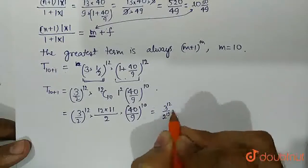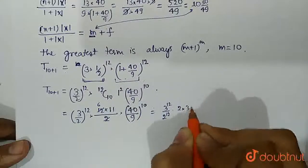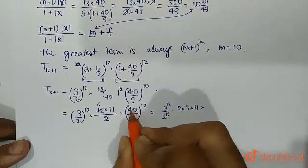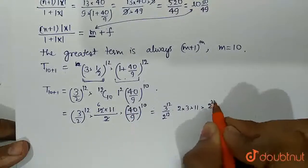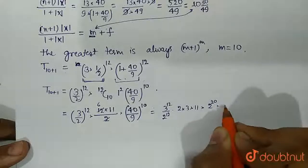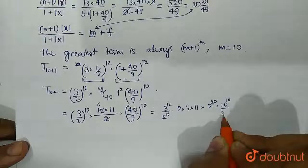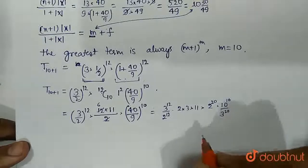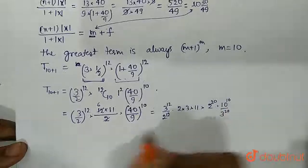Into this becomes 6, 2 times 3, times 11, times this can be written as 4 into 10 so 2 raised to the power 20 into 10 raised to the power 10 upon 3 raised to the power 20.